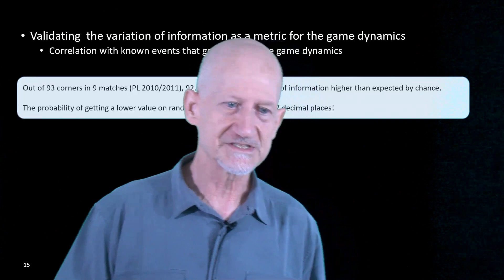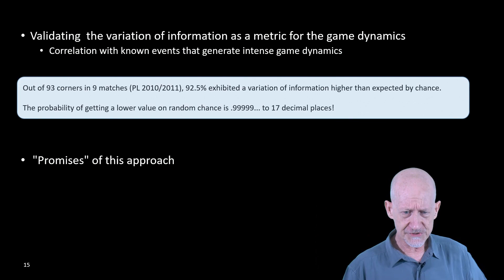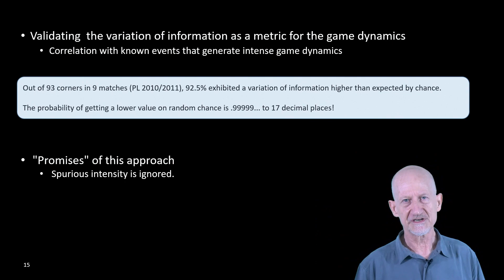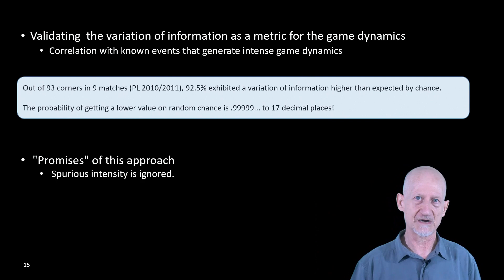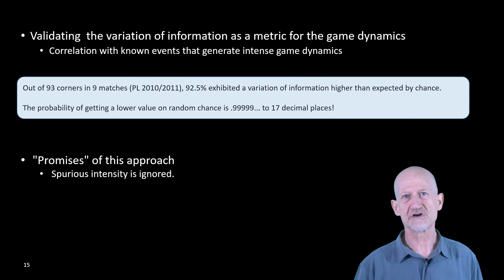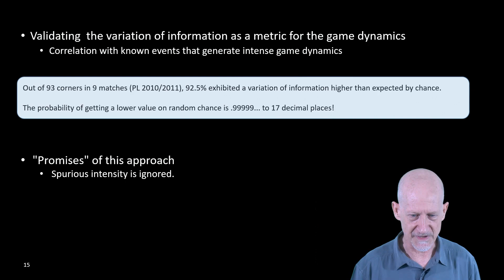What are the promises of this approach? The first one is that if there's no changes in the simplexes, if there's no structural changes, then we register zero, we register no variation of information. Even if the sets of players are moving very fast on the pitch, if there's no changes in the simplexes, then there's no structural disruption, which means that nothing basically is happening, and that's what the metric is measuring.